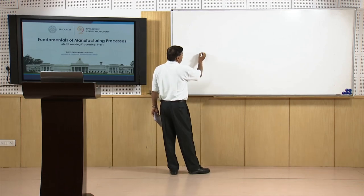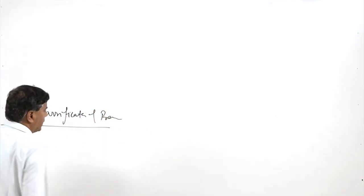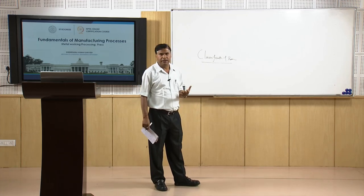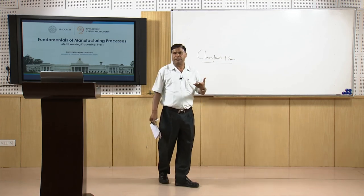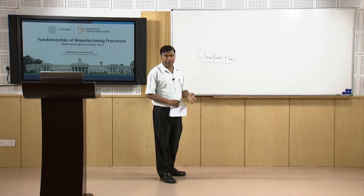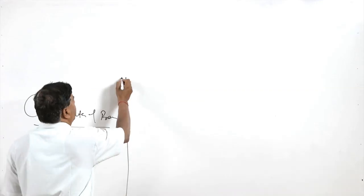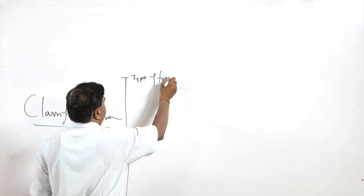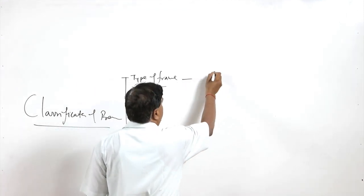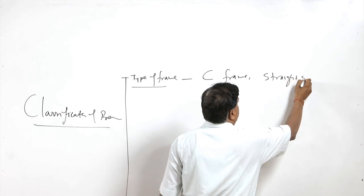We will now see the classification of presses. Classification helps to see the press in different ways, and understanding press designs and functioning helps in understanding capabilities and limitations. Classification is based on a number of factors. One is the type of frame — there are two types normally used: the C-frame press and the straight-side press. Straight-side presses are used for high capacity and C-frame presses for somewhat lower capacity.